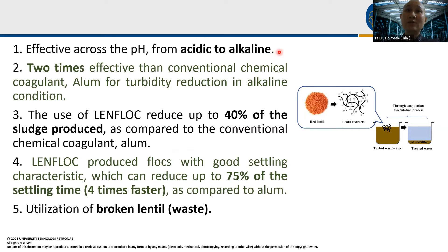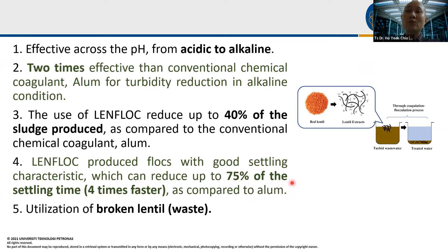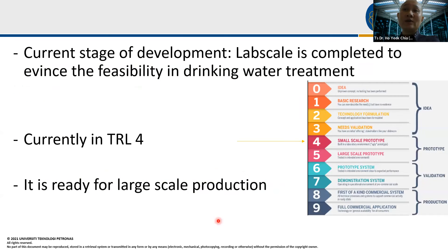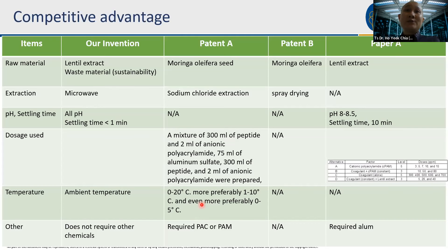In summary, our product works across all pH ranges, is two times more effective than alum due to its polymer charge, functional groups, and molecular weight, can reduce sludge production by 40%, and settles within one minute compared to approximately 30 minutes for normal water treatment. We use waste products as raw material. We have completed the prototype stage and are now ready for large-scale production.